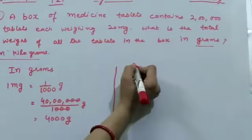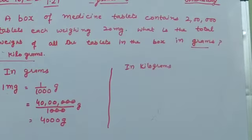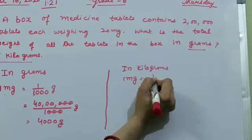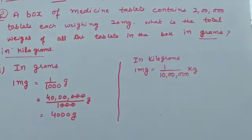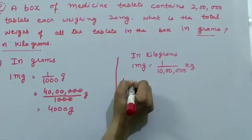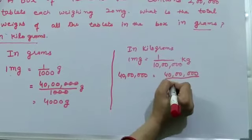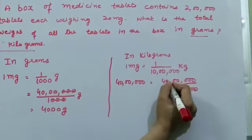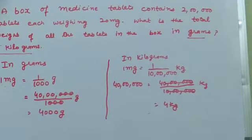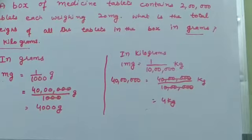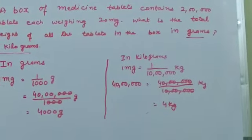After that, in kilograms. 1 mg is equal to 1 over 10 lakh kilograms. Then 40 lakh was your starting weight, the total weight you got. 40 lakh over 10 lakh. All six zeros cut. We have 4 kg. So our answer is 4000 grams and in kilograms our answer is 4 kg. Is it clear?